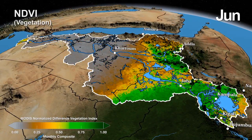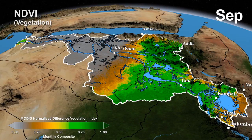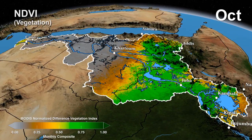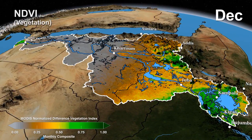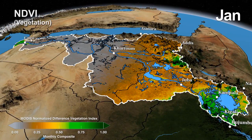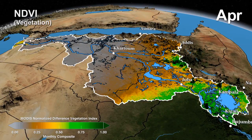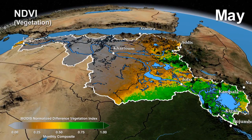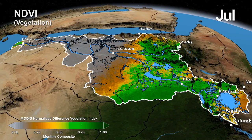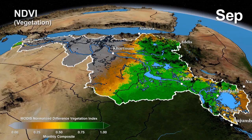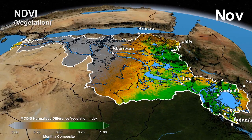How plant life responds to the water cycle can be seen in this measurement of vegetation. Farmers, and organizations like the Famine Early Warning Systems Network, use these measurements to monitor croplands and predict food shortages.